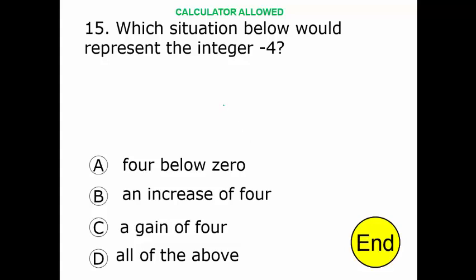Alright, which situation below would represent the integer minus 4? Integers are just numbers. Minus 4 is 4 below 0. So where would we use that in real life? When we measure temperature, it actually can go below 0 — I'm sure you're all aware of that. So 4 below 0 would be represented by the number negative 4.